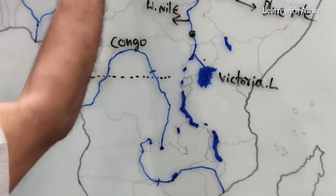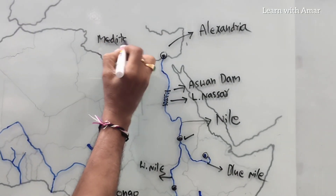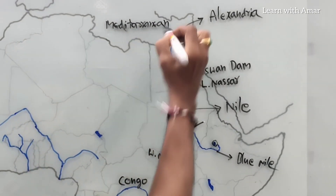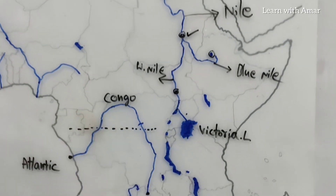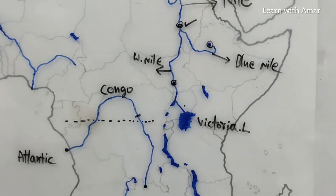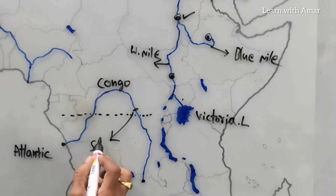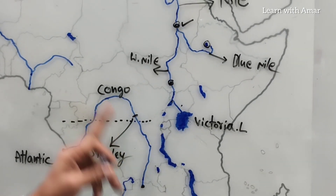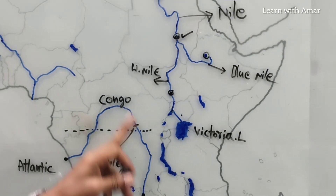This is the Mediterranean Sea over here. There is also a waterfall on this river. This waterfall is known as Stanley Falls. Stanley Falls can be found on the Congo River. What was the old name of Congo River? River Zaire.